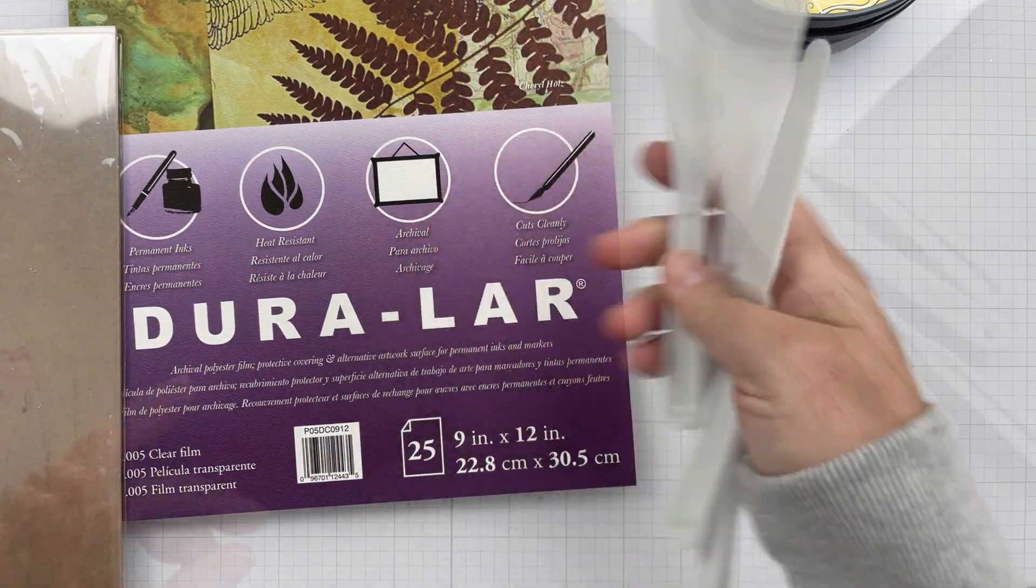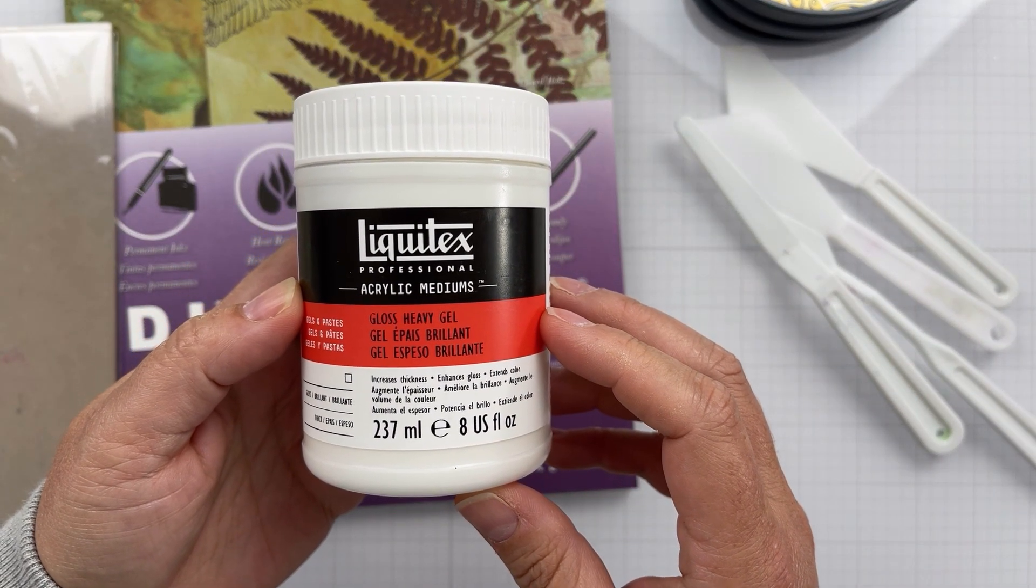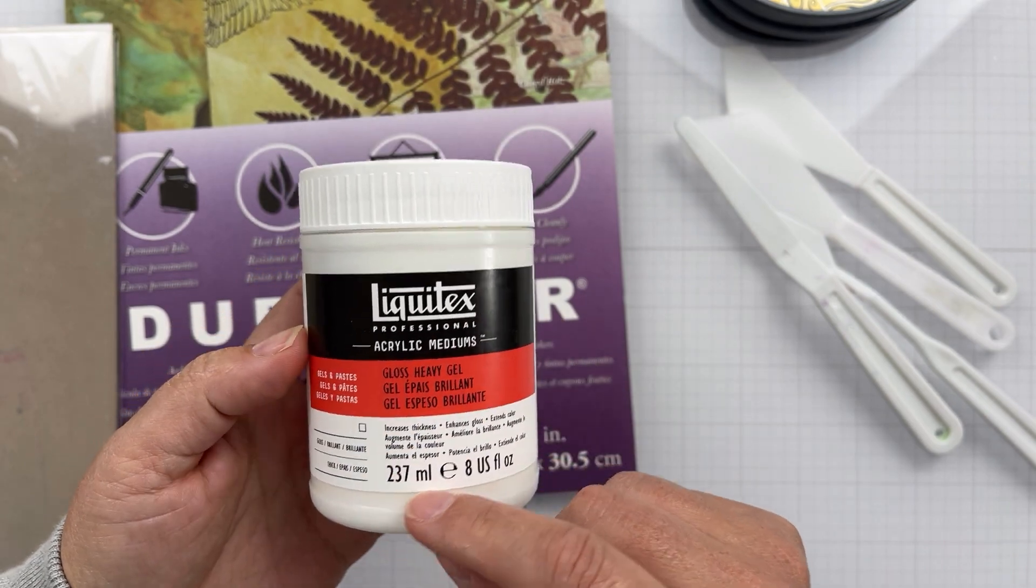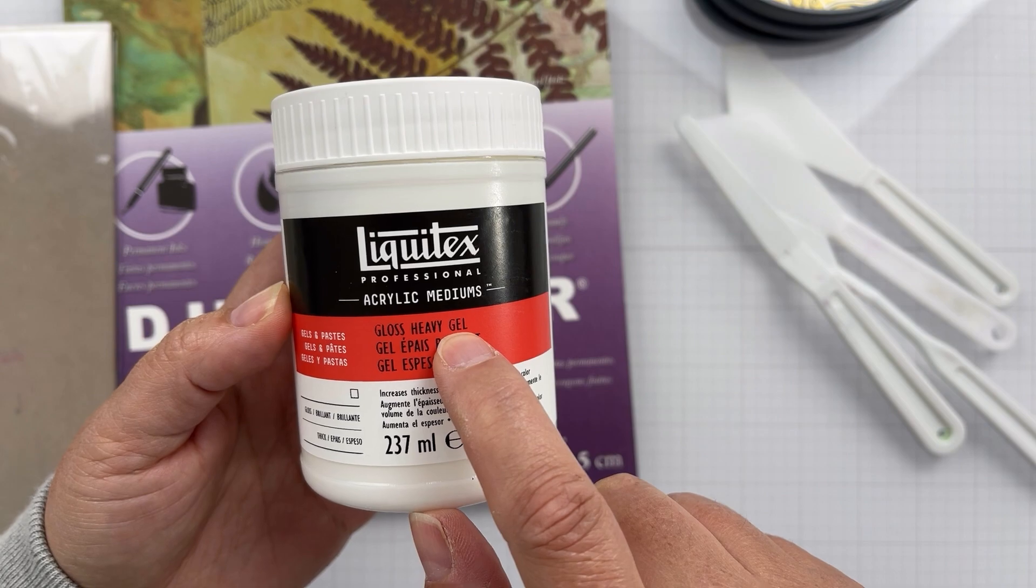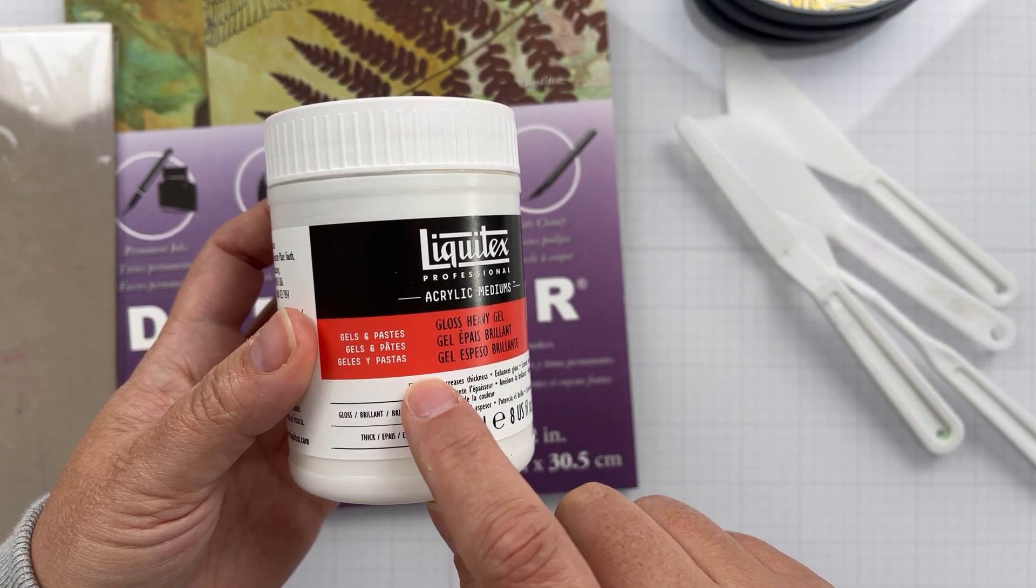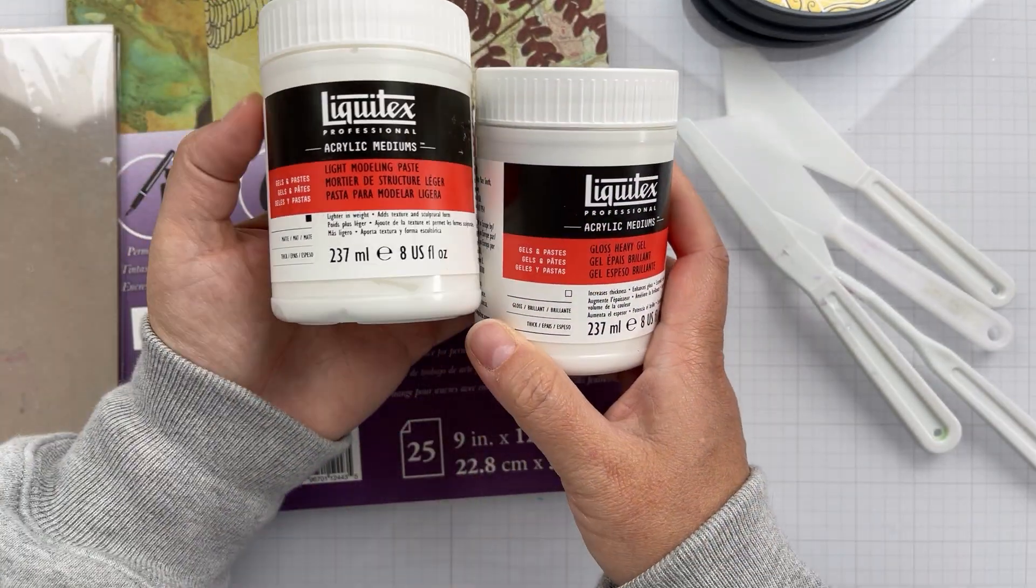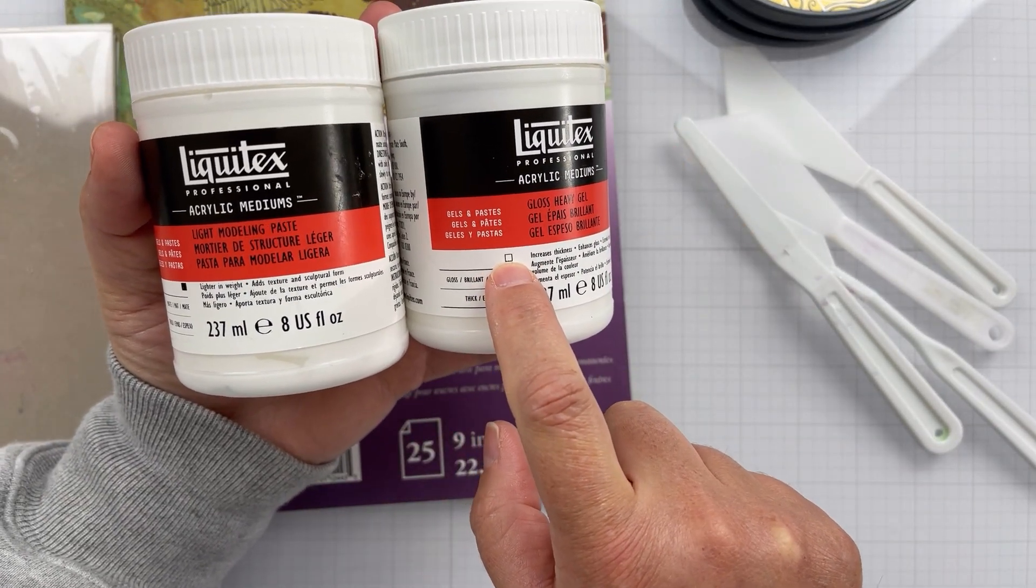And then of course you need some dye inks. We've got Gloss Heavy Gel. If you have something from Ranger, just make sure that it says it dries transparent, preferably a gloss, because that's going to give you the shine and that glass-like look. On the Liquitex, it tells you if you've got a white square, it's going to dry clear.